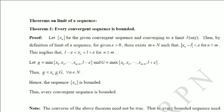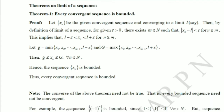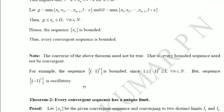What about the converse — is every bounded sequence convergent? In general, it need not be true. For example, consider the sequence (−1)^n. The terms are either +1 or −1, so all terms satisfy −1 ≤ xn ≤ 1, meaning the sequence is bounded. But this sequence is oscillatory, so it is not convergent. Therefore, every bounded sequence need not be convergent, but every convergent sequence is bounded.